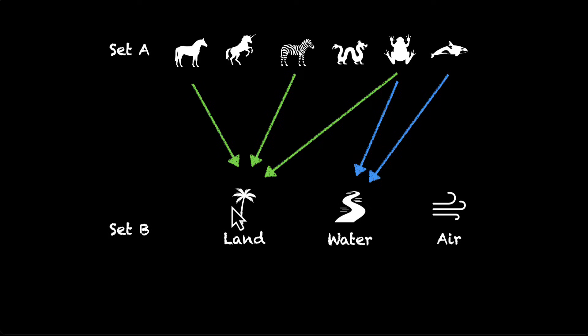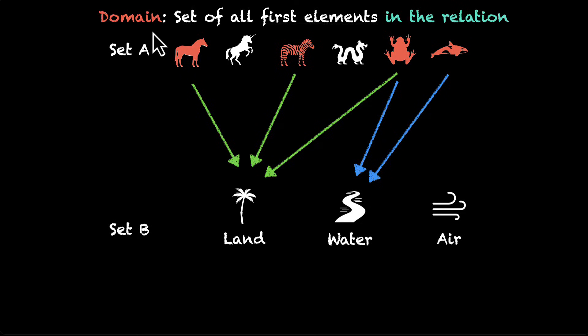Let's look at the elements that are participating. We have the horse, the zebra, the frog, and the fish. These four from set A that are related to some elements of set B, they're called the domain. The domain is the set of all first elements in the relation.